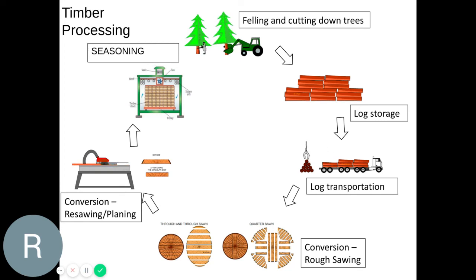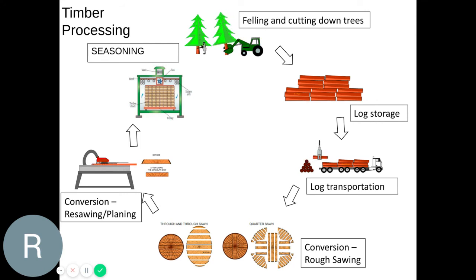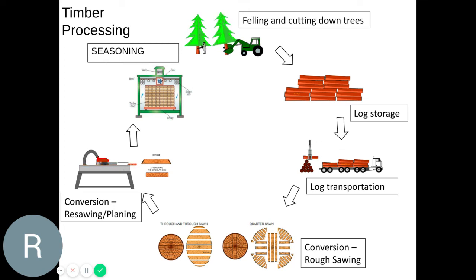So that is the processing of both paper and timber. For your AQA GCDT exam, you will need to know the key stages of each process and a little explanation of what is happening at those key stages.